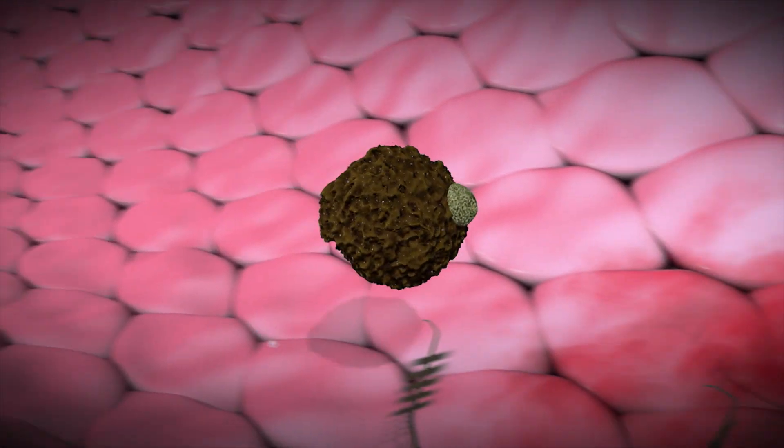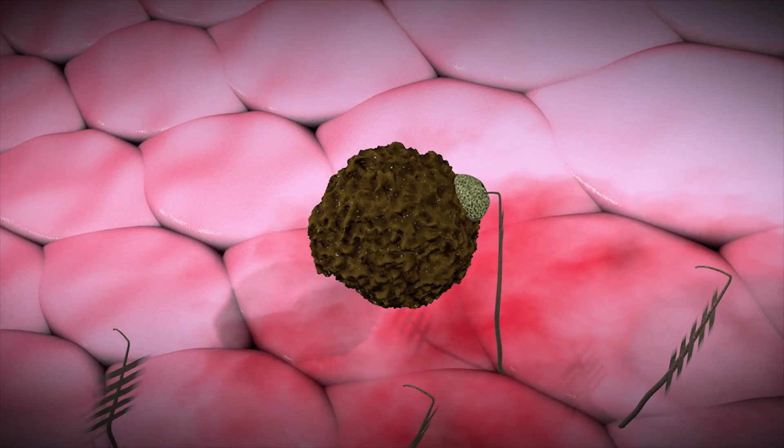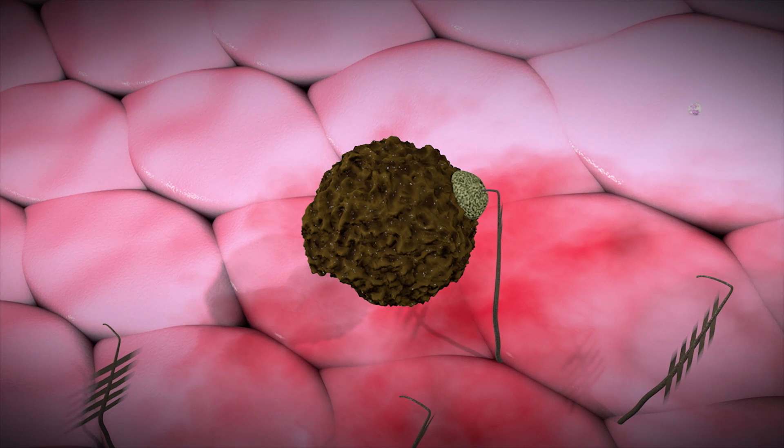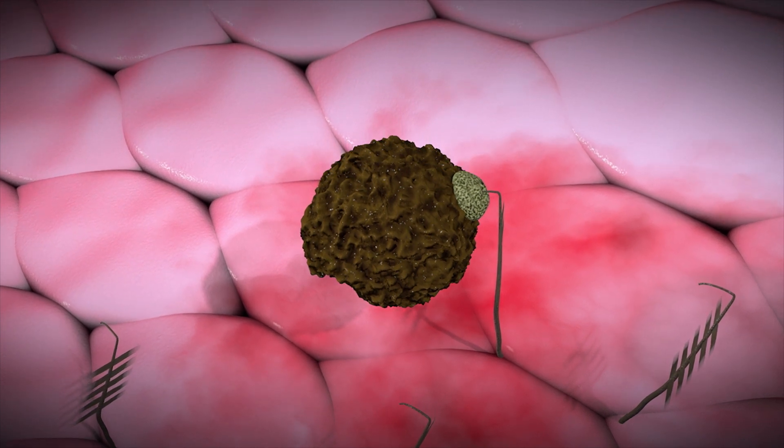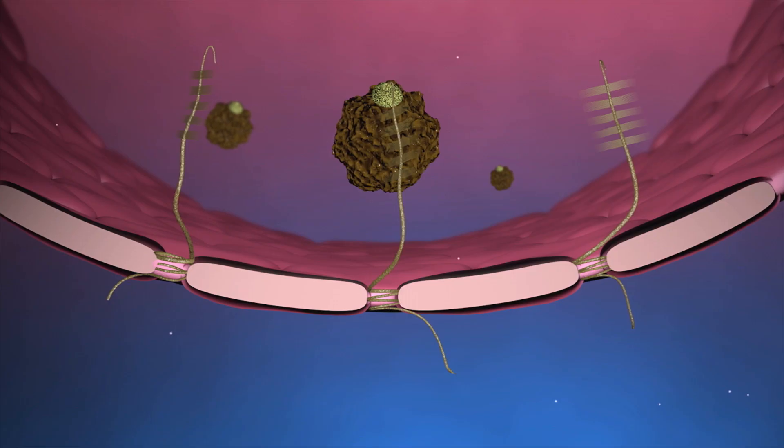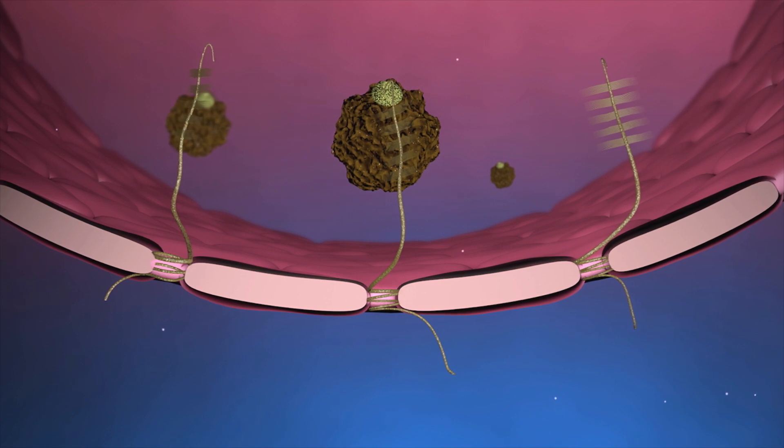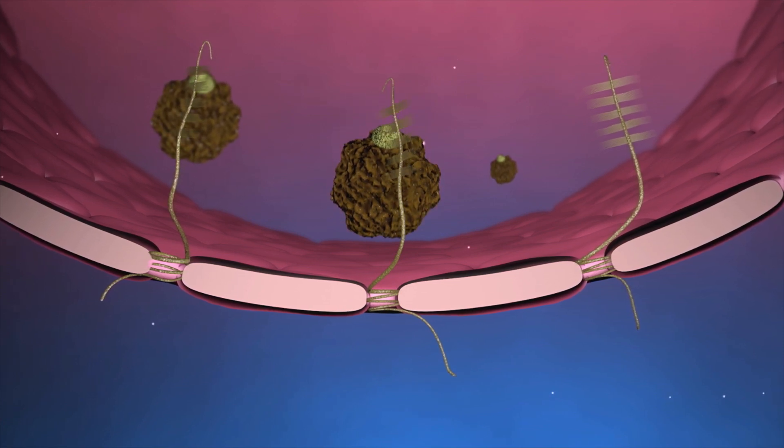Just like certain immune cells, cancer cells carry a receptor that binds to fractalkine. When a cancer cell has bound to fractalkine, it can then find its way through the blood vessel cells and into healthy organs.